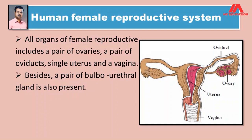Besides, a pair of bulbo-urethral glands is also present. Stri prajanan sanstheth asnarye sarv avayave udar poklit astat. Ya made pramukhayne andashayachi ek jodi, and nalikachi ek jodi, ek garbhashay, ek yoni yanchaa samaavesh hoto. Ya vetirekt kand mutramearg grantichi ek jodi aapnaas pahavayaas milte.